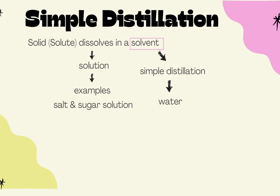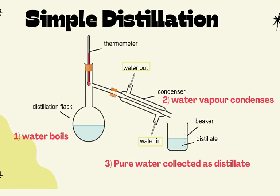This shows the simple distillation setup. There are three main processes: first, the water boils in the distillation flask; when the boiling point is reached, the water vapor moves up into the condenser, where the vapor condenses into liquid; and then it is collected as the distillate in a beaker or conical flask.